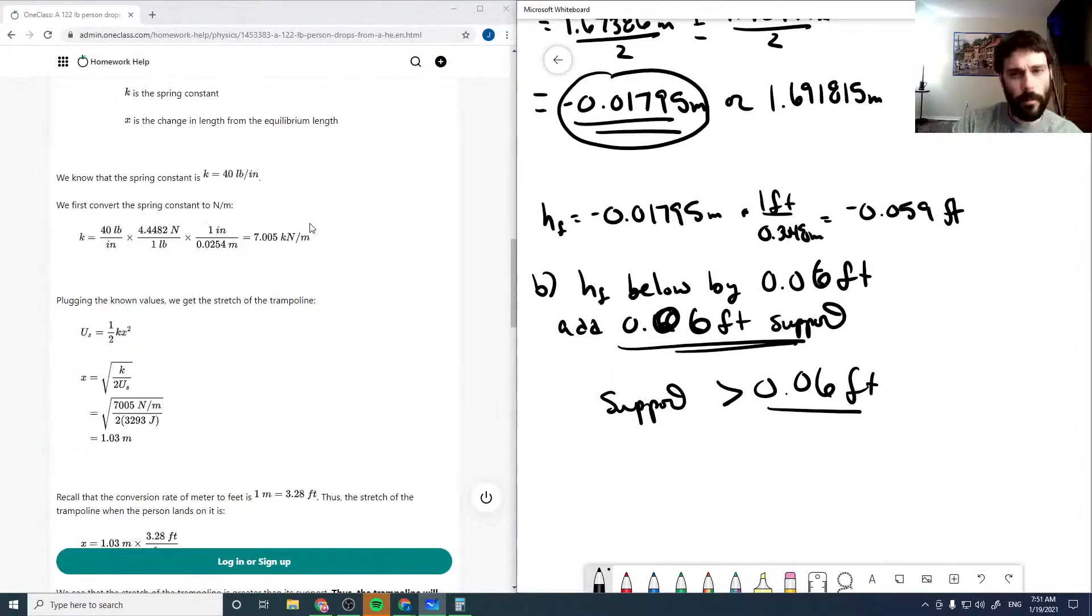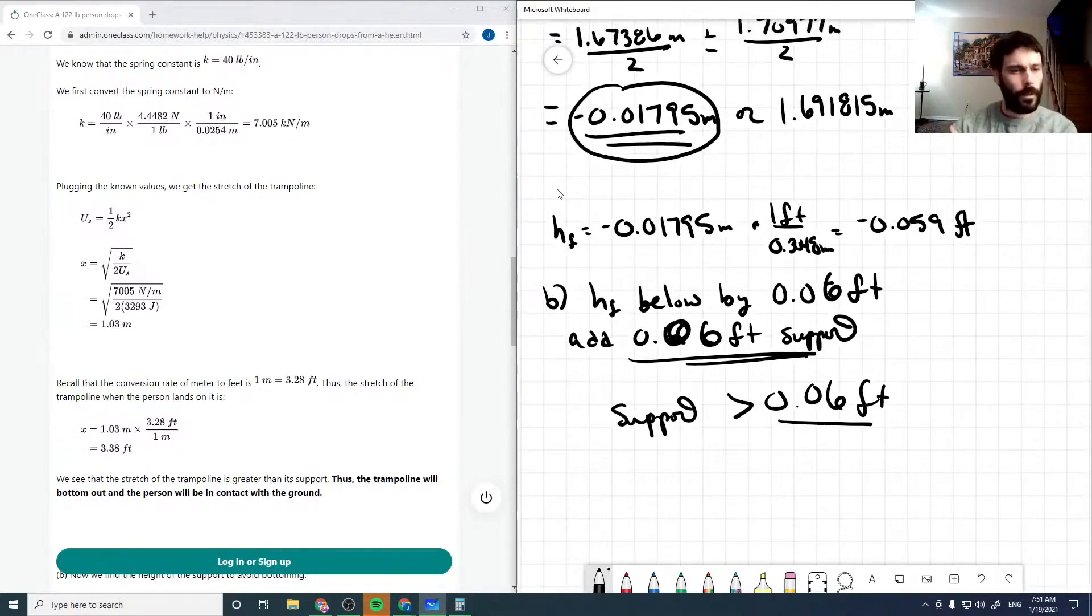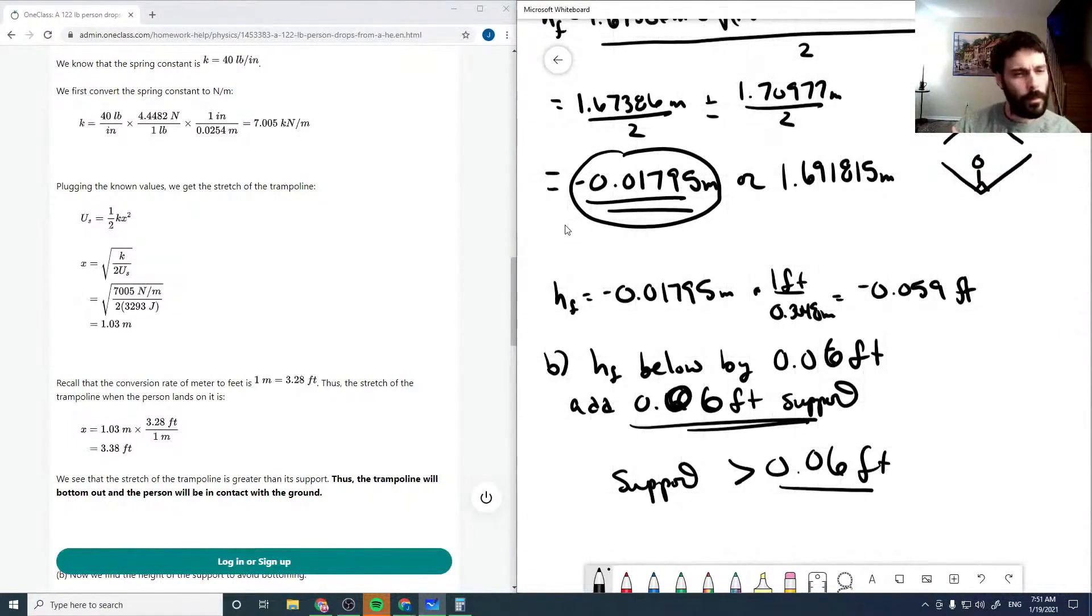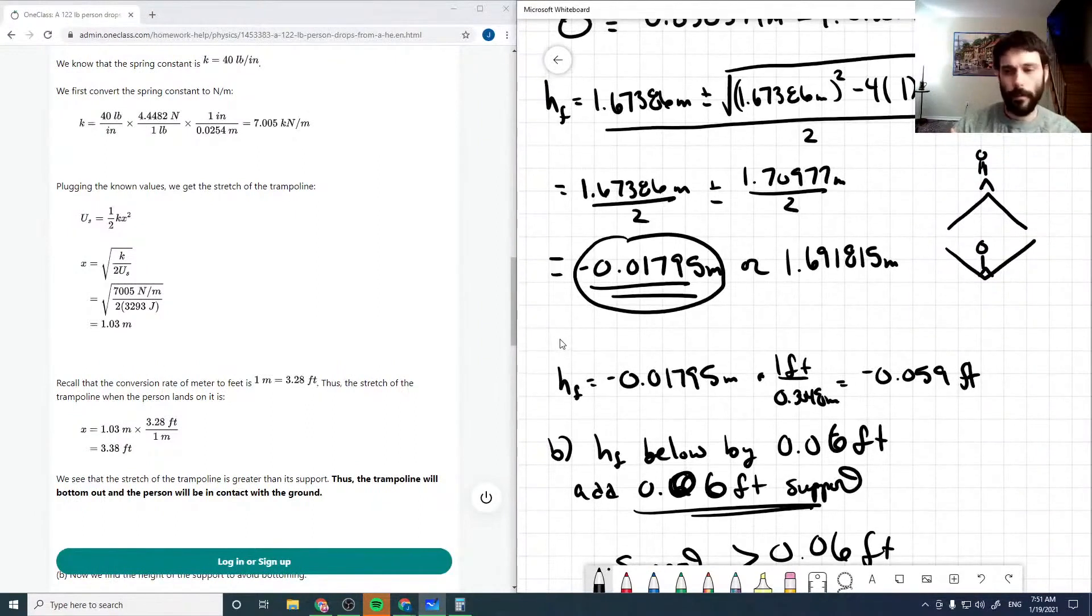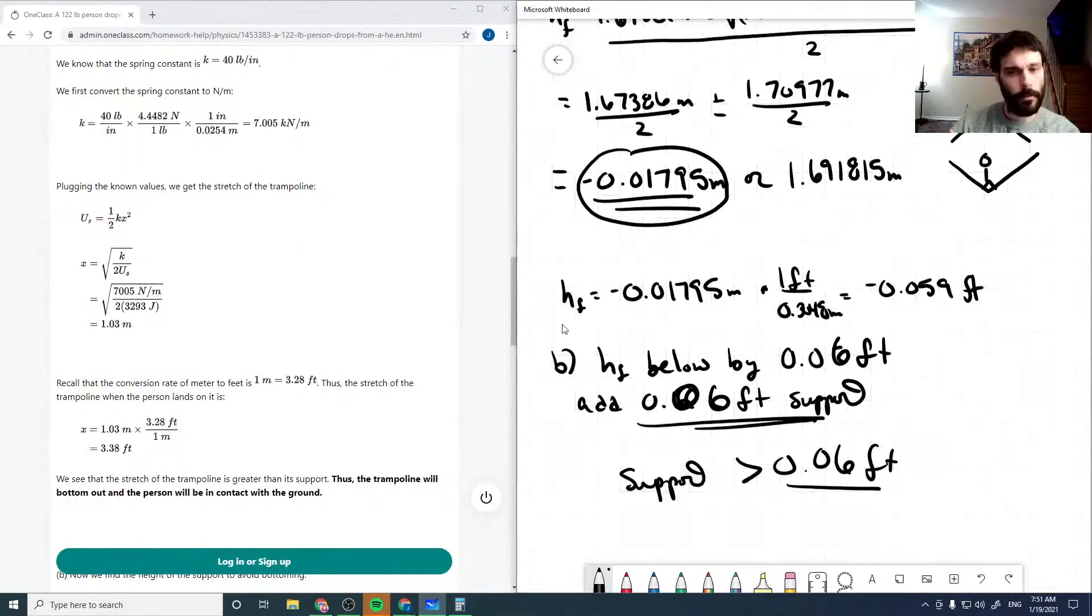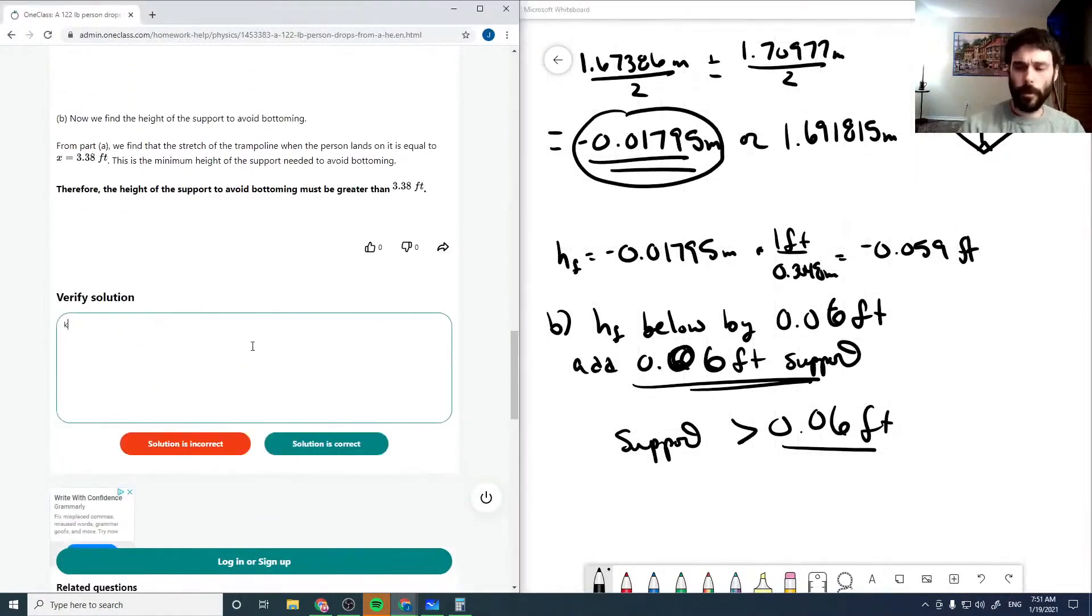So actually, you don't bottom out quite that badly. So this final energy here doesn't include gravitational potential energy, the final gravitational potential energy of the person. So it's putting all the energy into the trampoline, but the person still has gravitational potential energy, and so that actually reduces the amount that it's bottoming out. So I'm gonna say that the final potential energy is missing gravitation. And I'm gonna say that this is incorrect.